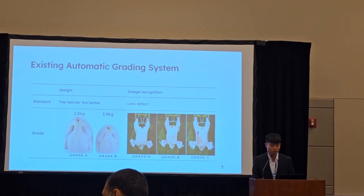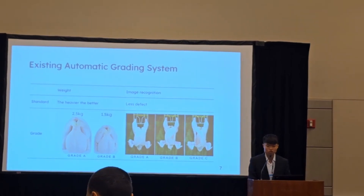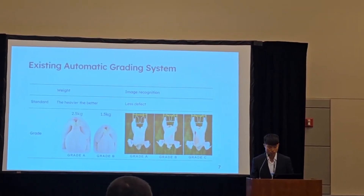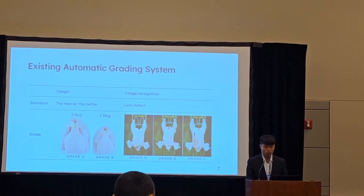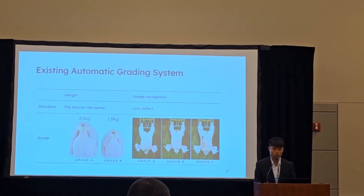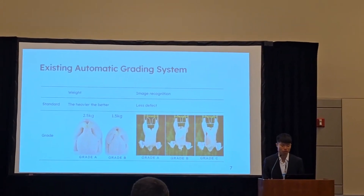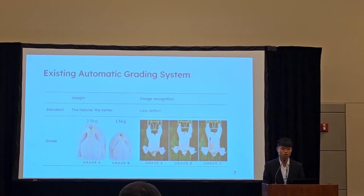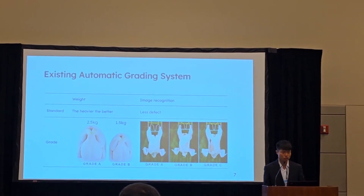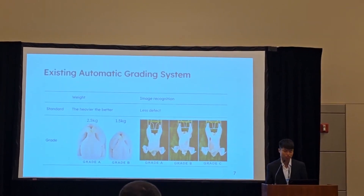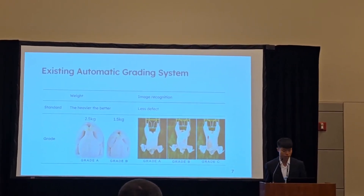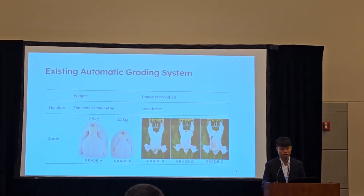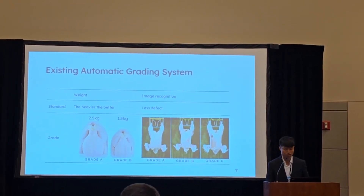To pick out the defect carcasses, the industry uses a grading system. The existing commercial grading system can be broken into two parts: weight grading and image recognition grading. The weight grading standard is the heavier the better, and the image recognition grading standard is the less defect, the better the grading.